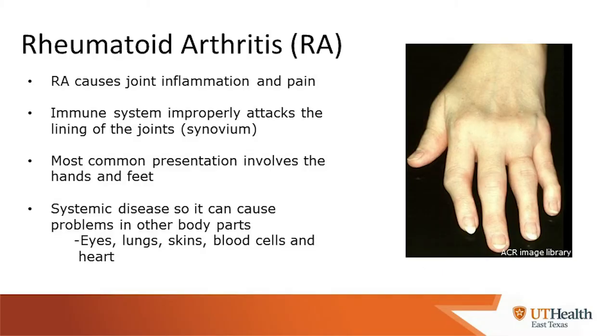Now we're going to talk about rheumatoid arthritis. RA is an arthritis that not only causes pain but causes significant inflammation in the joint. It is a problem where the immune system improperly attacks the lining of the joint, also known as the synovium, and it most commonly presents in the hands and feet. It is a systemic disease, so it can also affect other body parts like the eyes, lungs, skin, blood cells, and the heart.